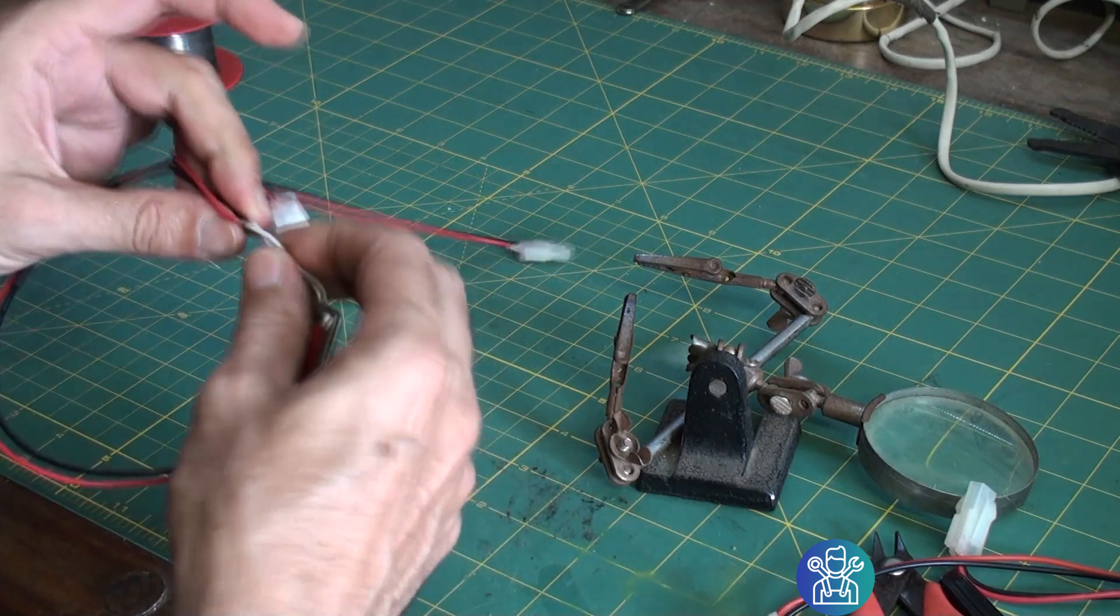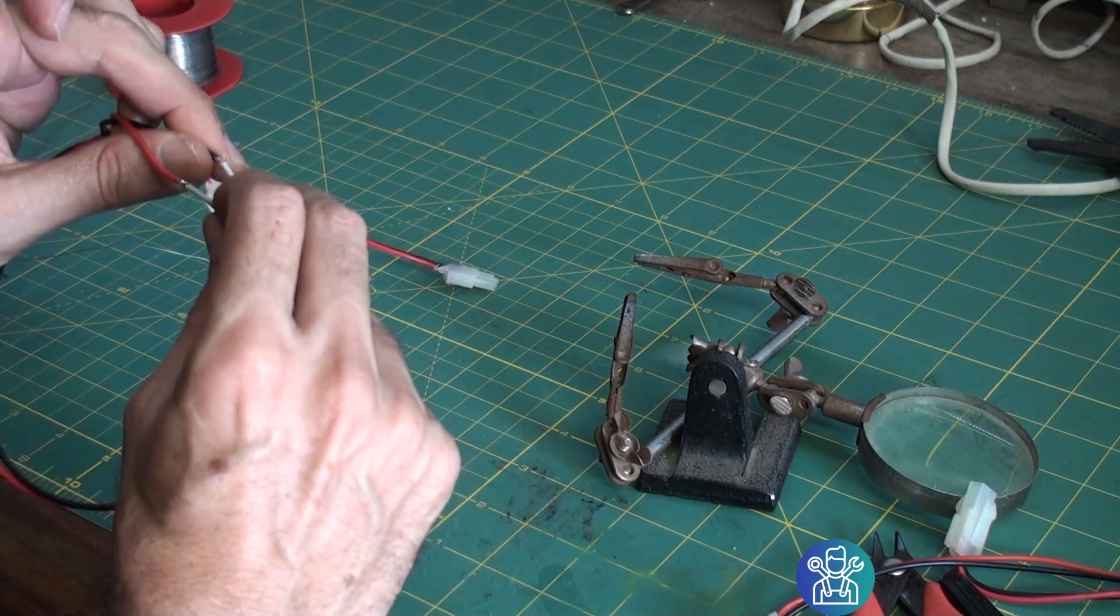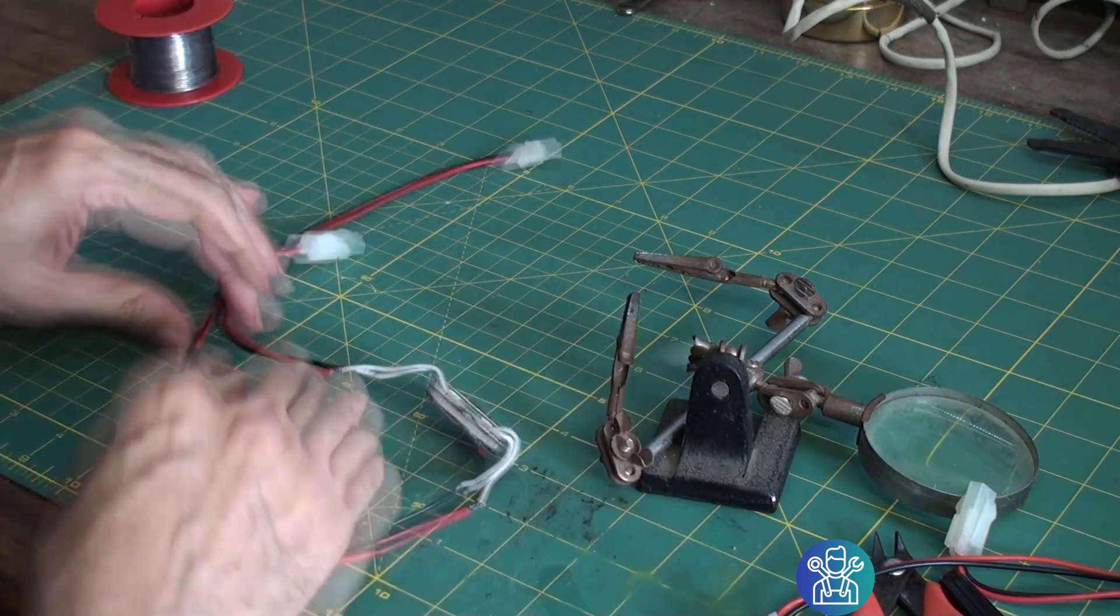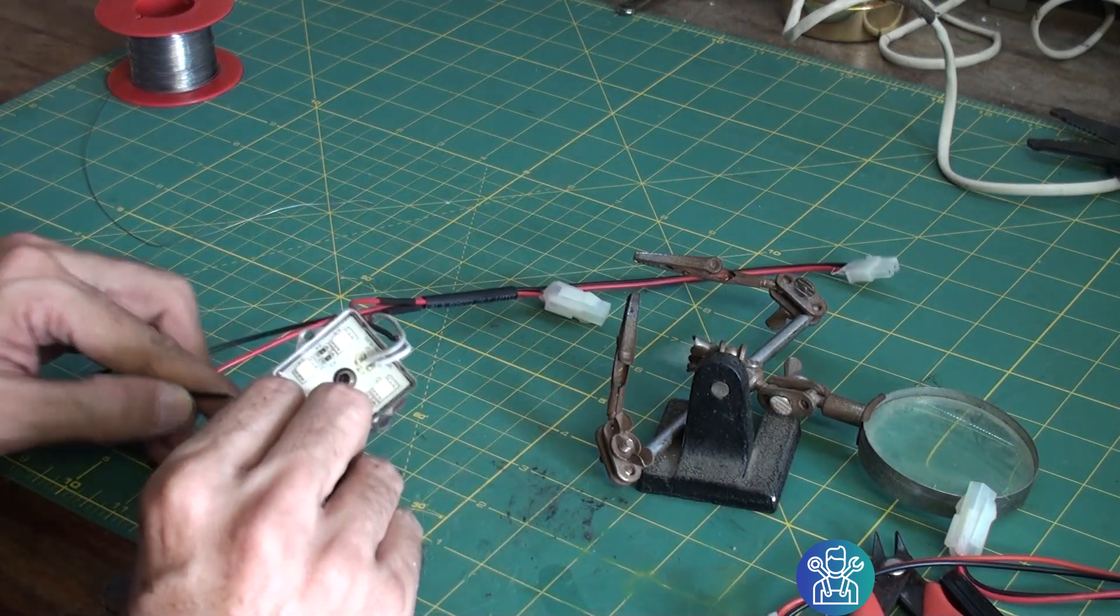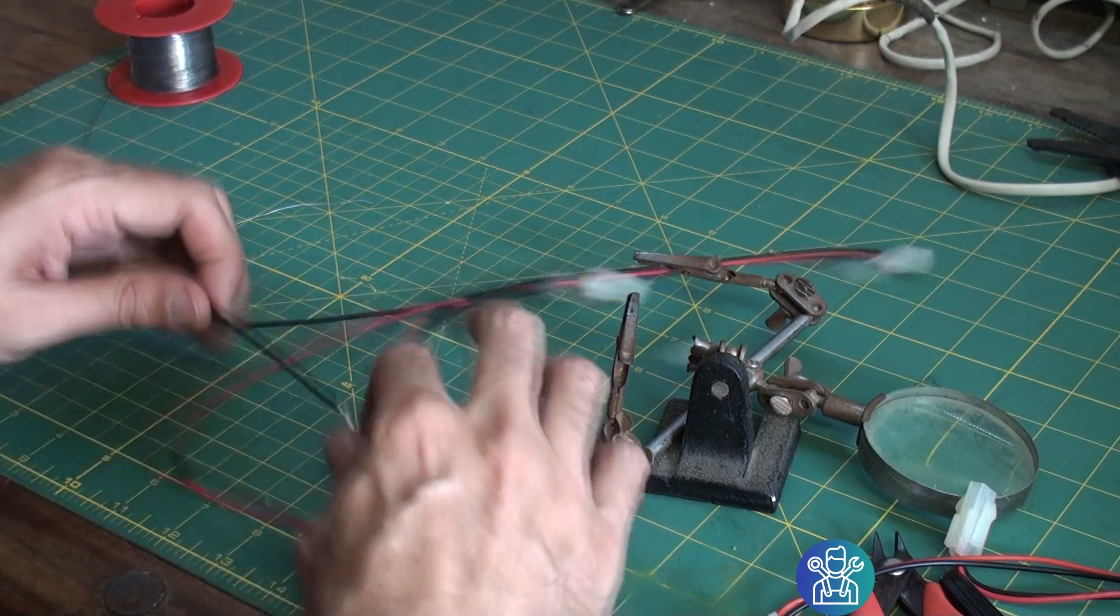Now just checking the soldering just to make sure that everything is fine. I'll put the heat shrink again - white is the minus, gray is the plus.